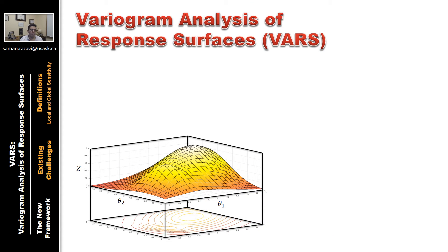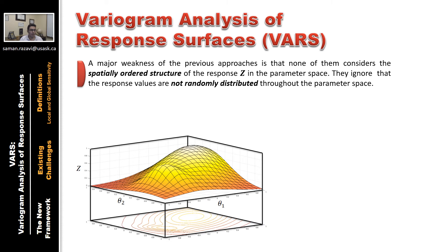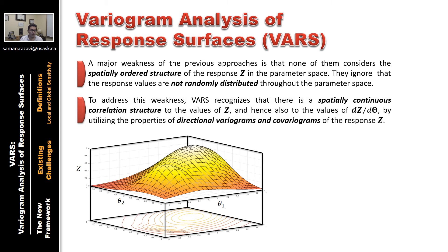VARS stands for Variogram Analysis of Response Surfaces. A major weakness of the previous approaches, as I talked about, is that none of them considers or accounts for the spatially ordered structure of the response z in the parameter space. In other words, they ignore the fact that the response values are not randomly distributed throughout the parameter space. Unlike those, VARS or Variogram Analysis of Response Surfaces is based on the recognition that there is a spatially continuous correlation structure to the values of z and hence to the values of its partial derivatives.